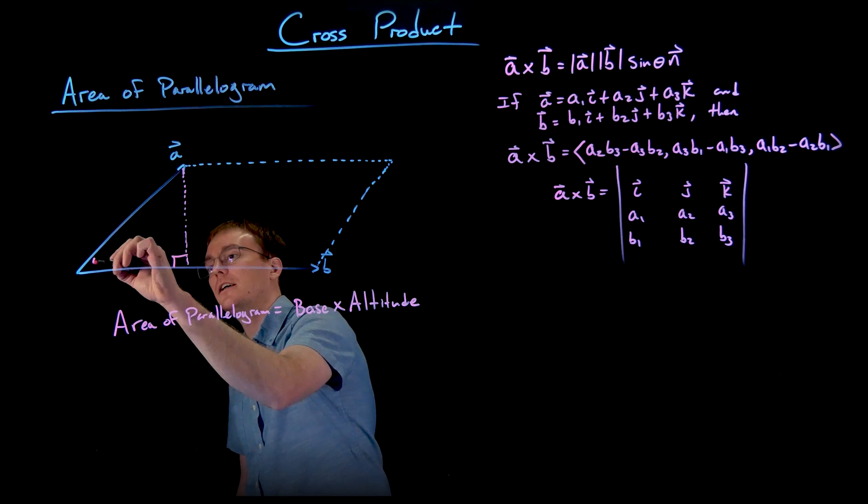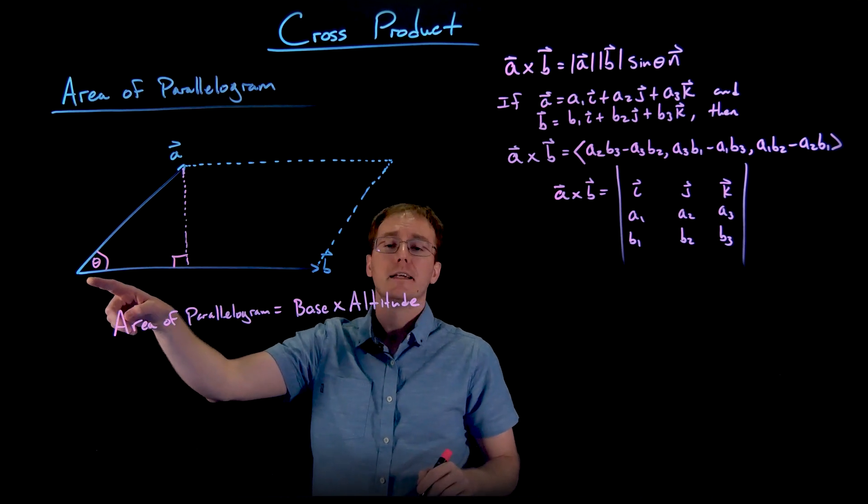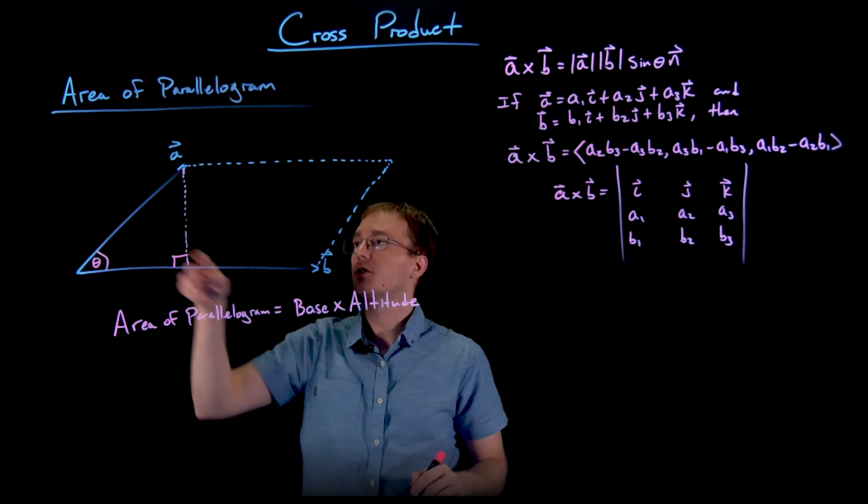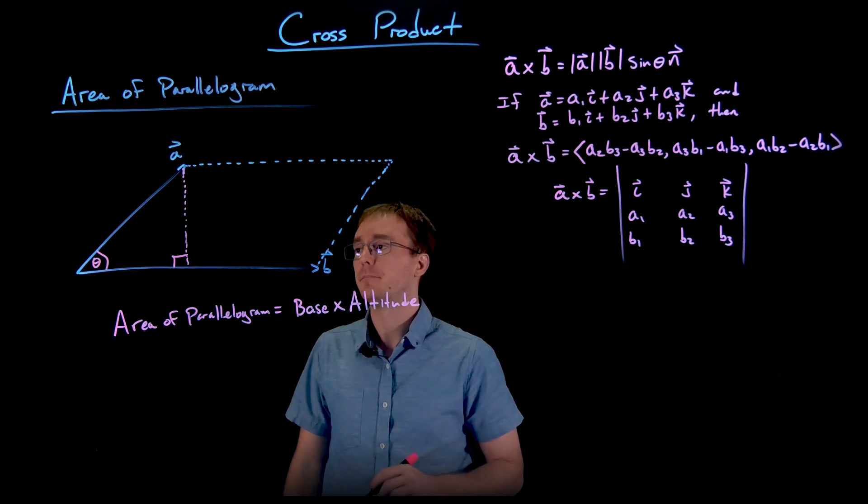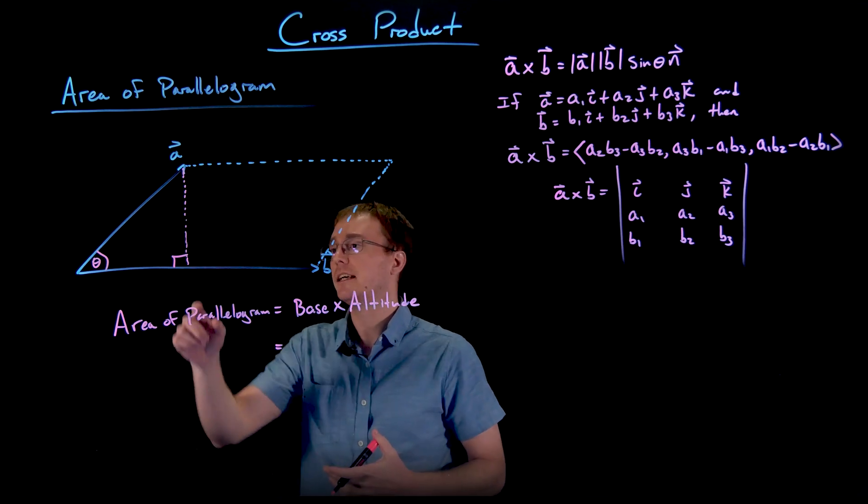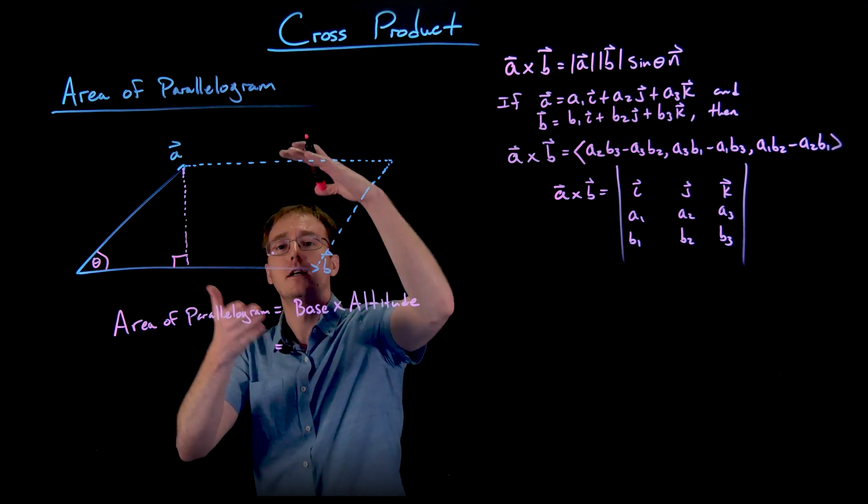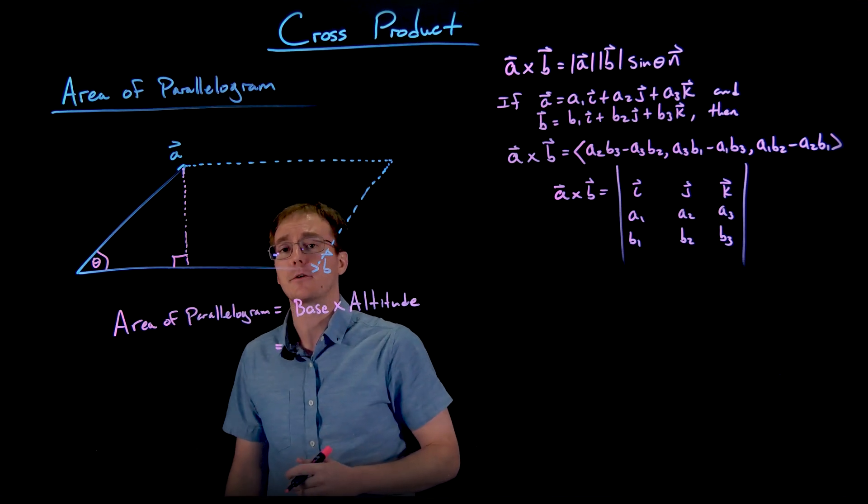What we can see is that this right triangle here is going to have an angle theta, where this angle theta is going to be the angle between our two vectors A and B. And so then what we can figure out using a little bit of right triangle trigonometry is the height of this right triangle, which is going to represent the altitude or the total height of our parallelogram.